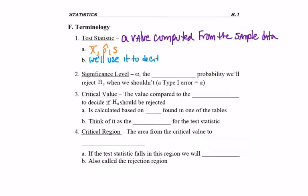And this is what we will use to decide if we reject H0. Before we talk about the next piece, we need to cover the significance level, and that is just alpha, which is the maximum probability that we'll reject H0 when we shouldn't — a type 1 error. Remember, if H0 is not wrong, then we should not be rejecting it. We should not be sending an innocent person to jail.